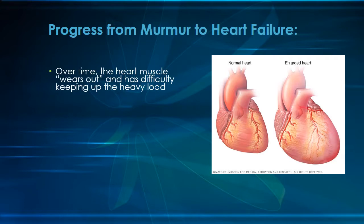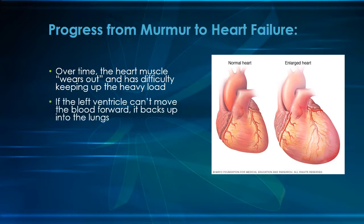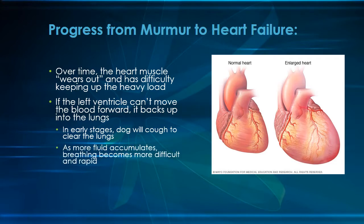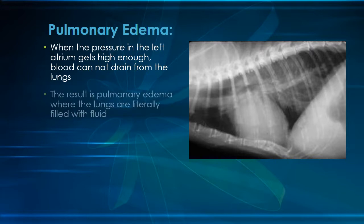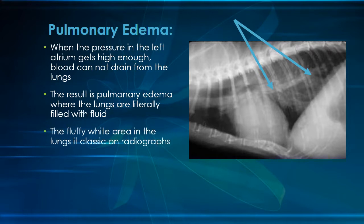With time, the left ventricle muscle slowly weakens and becomes an ineffective pump, and blood begins to back up into the lungs. As the fluid accumulates, it will cause the dog to cough and breathe more rapidly. As the condition worsens, the fluid load may be so great that the dog cannot breathe due to pulmonary edema. This radiograph shows pulmonary edema — all of the white area in the lung is unable to exchange oxygen to the blood. This is a medical emergency and if left untreated is often fatal.